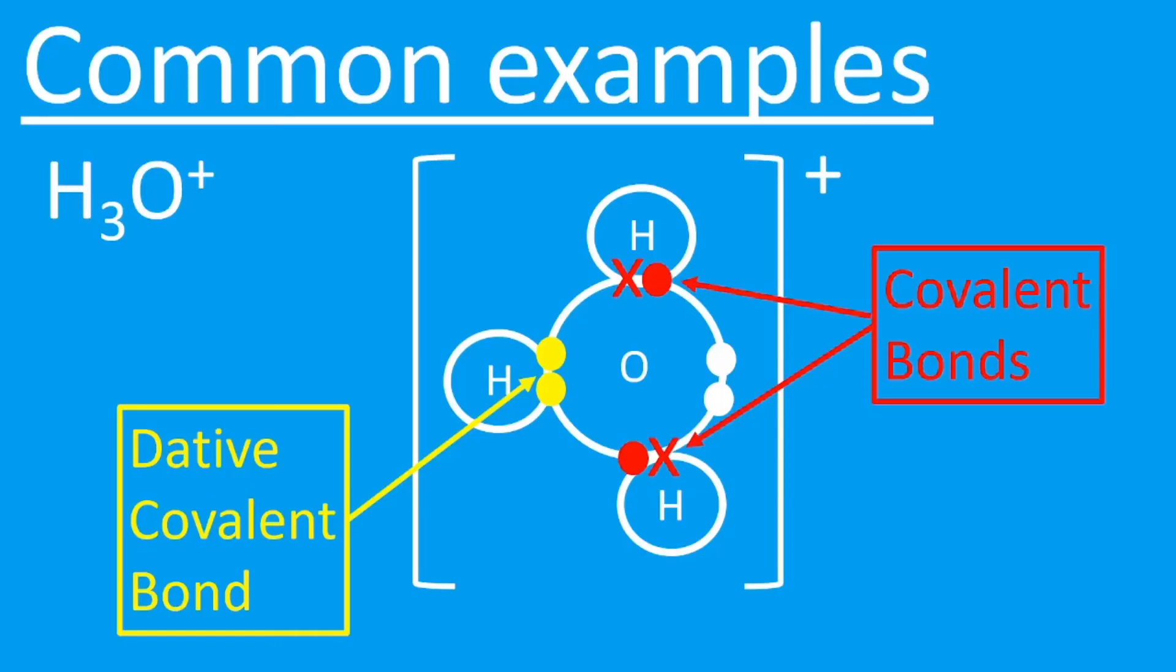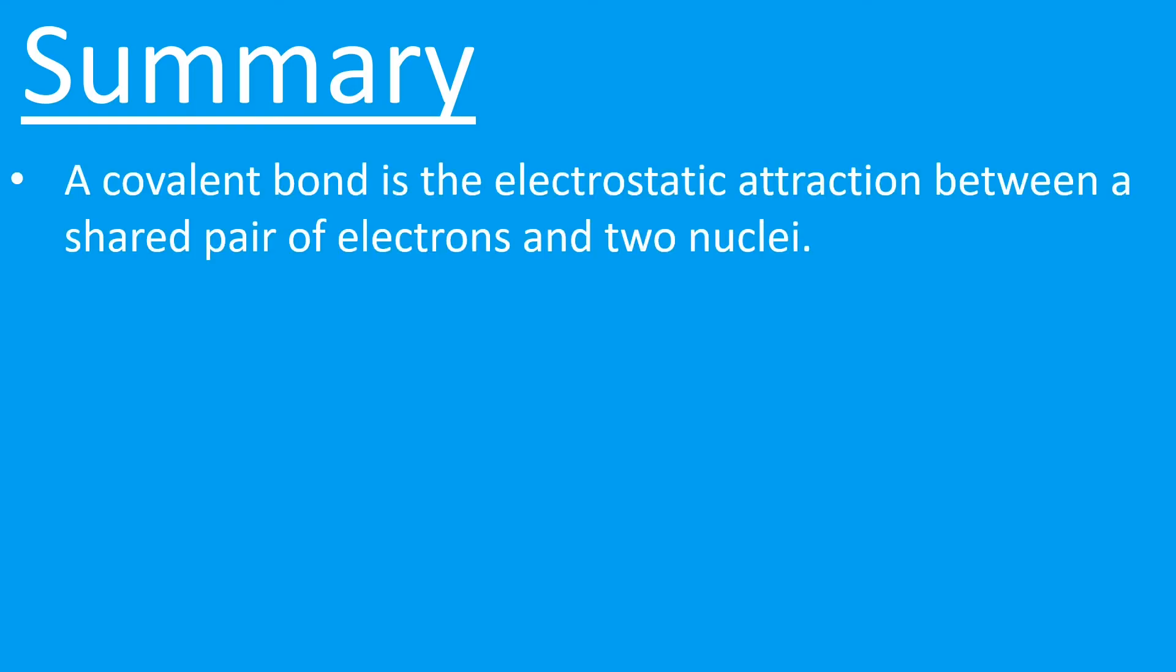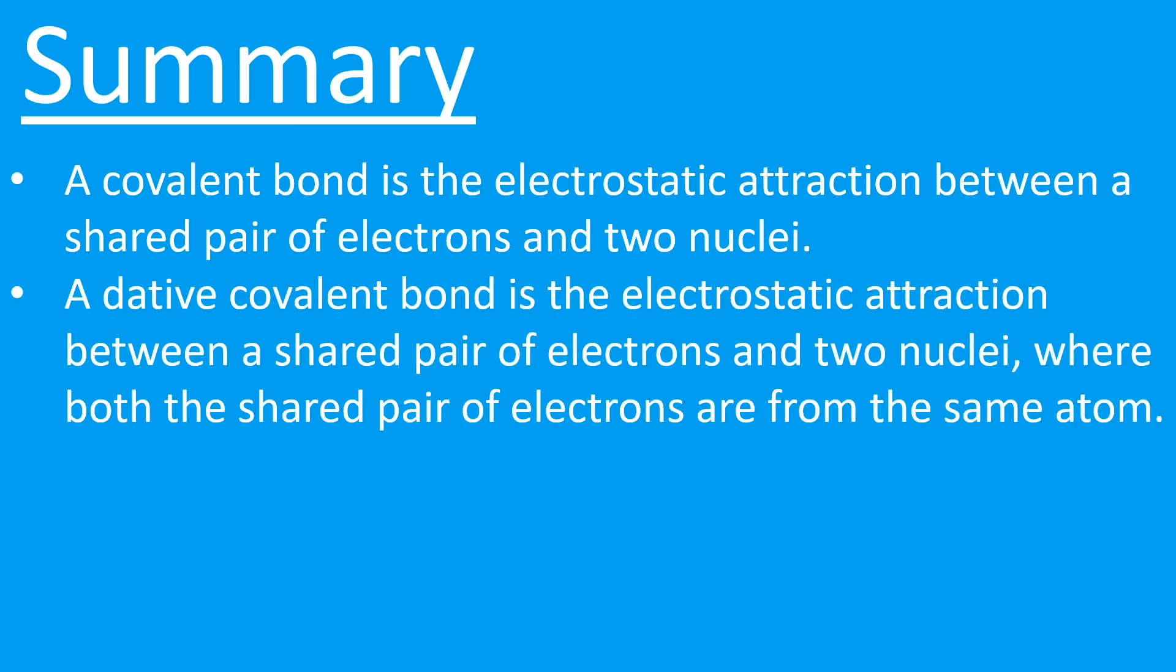Let's summarize then. A covalent bond is the electrostatic attraction between a shared pair of electrons and two nuclei. A dative covalent bond, or a coordinate bond, is the electrostatic attraction between a shared pair of electrons and two nuclei, where both of the shared pair of electrons are from the same atom.